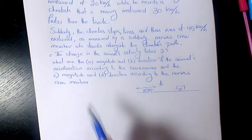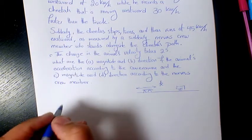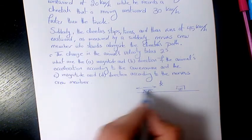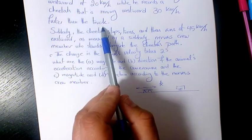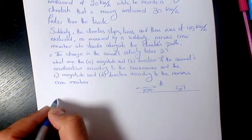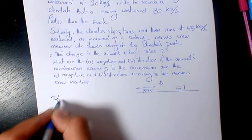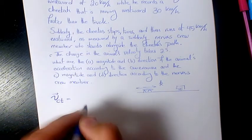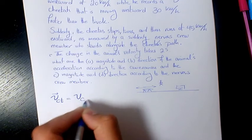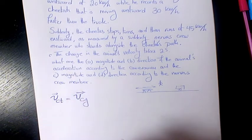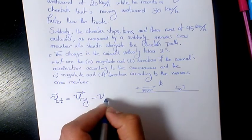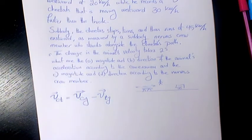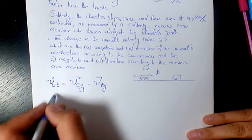Let's do parts A and B: the magnitude and direction of the animal's acceleration according to the cameraman. In the beginning the cheetah was 30 kilometers per hour faster than the truck. The velocity of the cheetah with respect to the cameraman (or truck) equals the velocity of the cheetah with respect to the ground minus the velocity of the truck with respect to the ground — that will be v_CT.